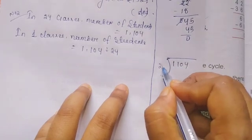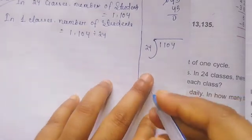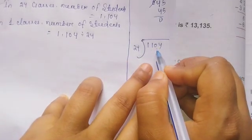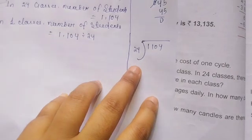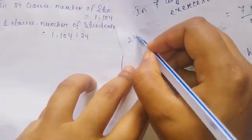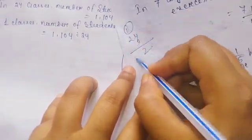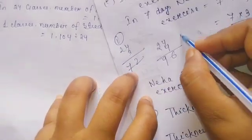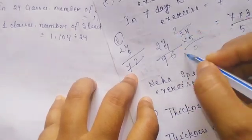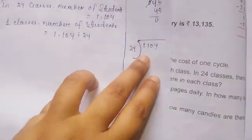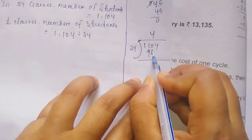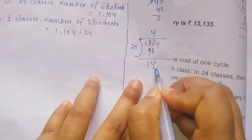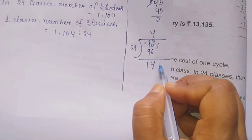1,104 divided by 24. First we divide: 11 is less than 24, so we take the next digit — 110. 24 times 4 is 96: 4 times 4 is 16, carry 1; 4 times 2 is 8 plus 1 equals 9. Then 24 times 5: 5 times 4 is 20, 5 times 2 is 10 plus carry equals 120 — too large. So 24 times 4 is 96. 106 minus 96: 6 minus 6 equals 0, then borrow: 10 minus 9 equals 1.